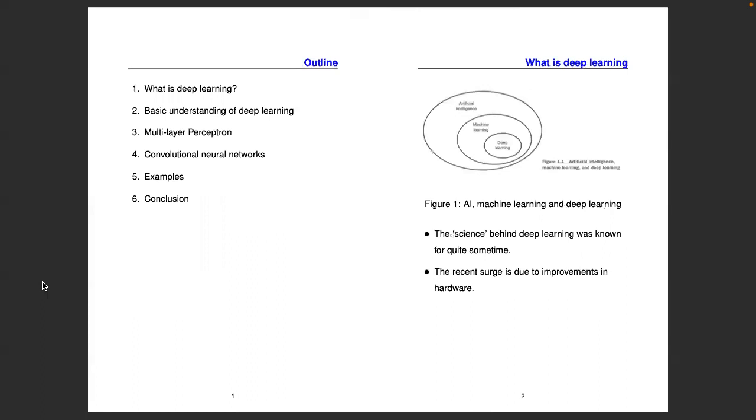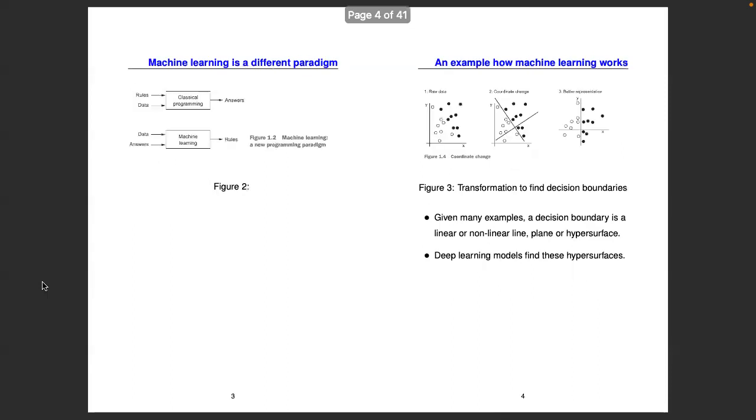As you can see in this picture here, deep learning these days has become synonymous with artificial intelligence, which is not really the case. Artificial intelligence is a much bigger area, and even machine learning is a much bigger area compared to deep learning. So deep learning is a part of machine learning, and the science behind deep learning was not invented just a few years ago. The science behind deep learning was known for quite some time now, maybe 30 years or even longer. But the recent surge is due to improvements in hardware, in particular GPUs, the graphics processing units that are used for playing games on computers. They have been customized to do deep learning.